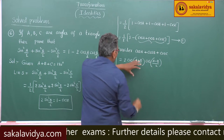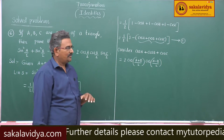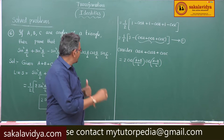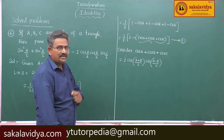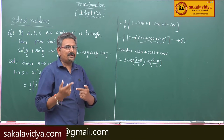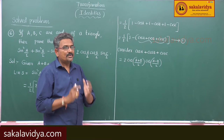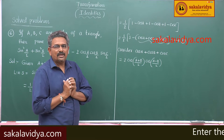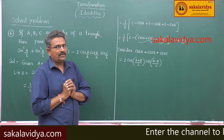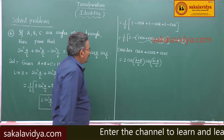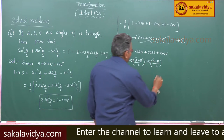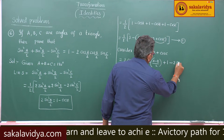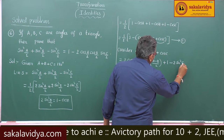Keeping in view that cos((A+B)/2) becomes sin(C/2), since A plus B plus C equals 180 degrees, cos((A+B)/2) equals sin(C/2). So it is better to write cosC as 1 minus 2sin²(C/2).